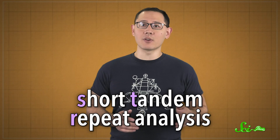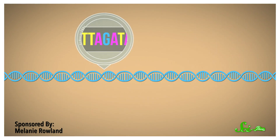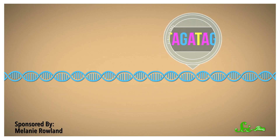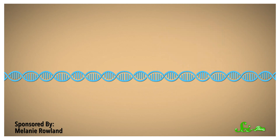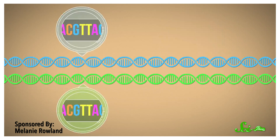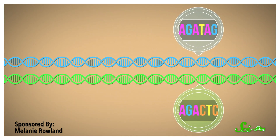Usually, forensic scientists process DNA with a method called short tandem repeat, or STR, analysis. The basic idea is that little stretches of short, repeated sequences — like TAGA — are scattered throughout your genome, in specific places on specific chromosomes. Because the number of repeats at each location tends to vary from person to person, counting them can be useful. Like, they can help match the semen in a rape kit to a suspect.